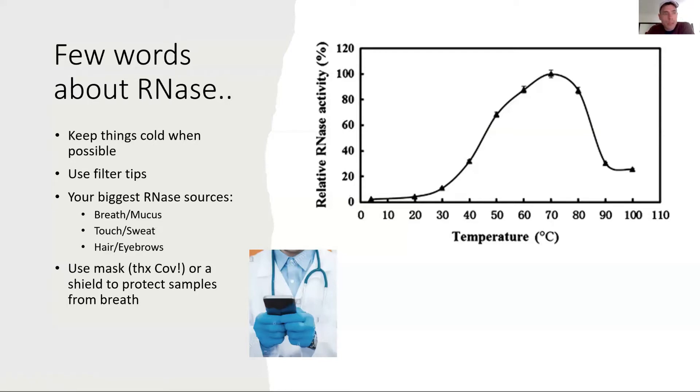For the same reason we use filter tips, because the pipette is blowing in air and ejecting it. If anything is in the air, that will go into our samples. I briefly wanted to touch on the biggest sources of RNA contamination. RNA is part of our breath as well as our mucus and sweat and touch. Believe it or not, there's the occasional hair or eyebrow that can fall in our samples if we don't have one of those protective plastic shields.